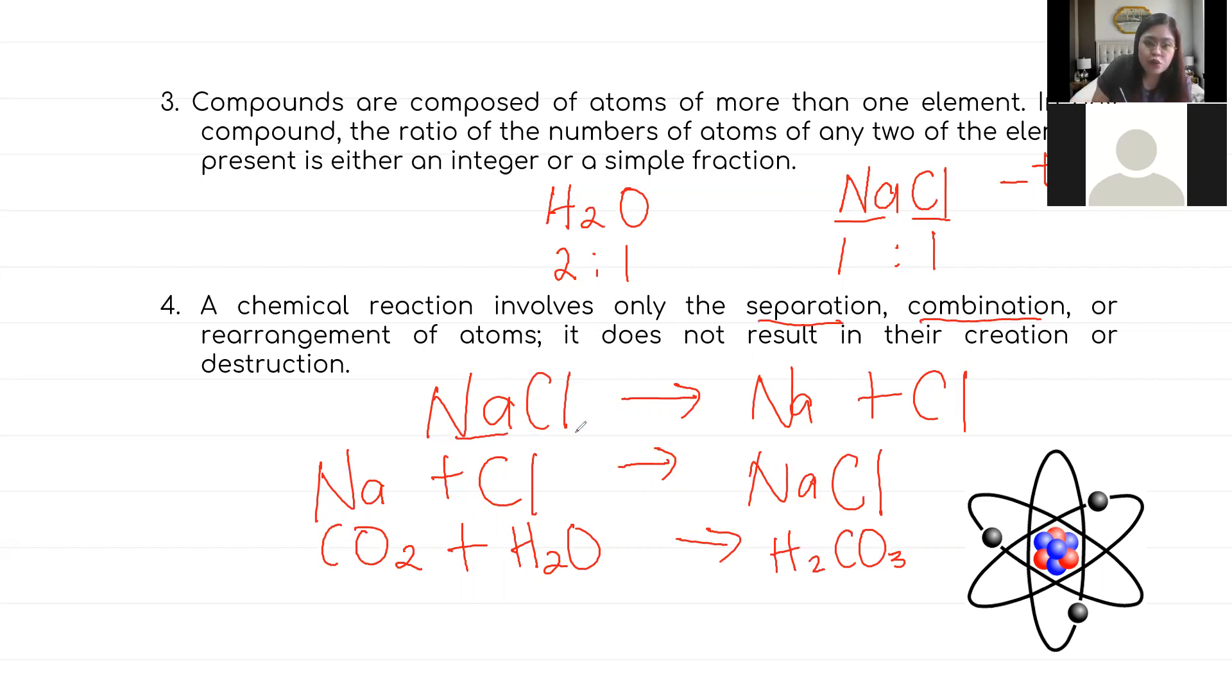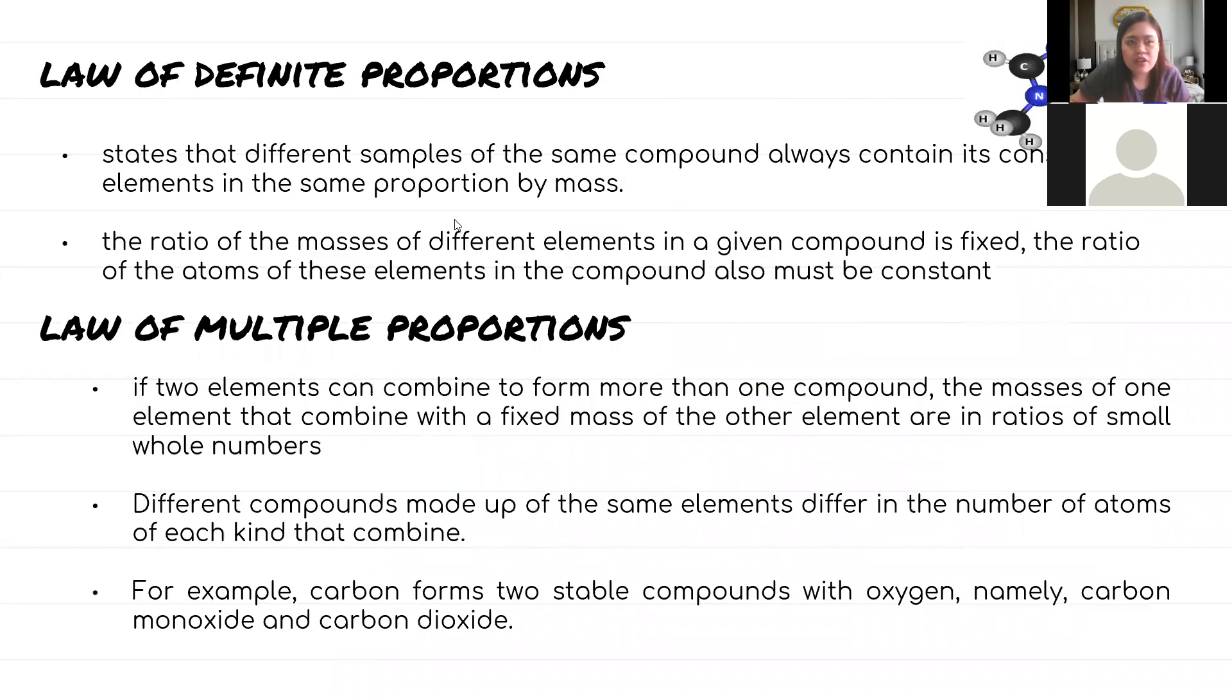In a chemical reaction, no new atoms are created or destroyed. When sodium and chloride separate, you will still get the sodium and the chloride. No new element is formed, no new atom is formed, and no atom is destroyed. These are the discoveries of John Dalton in his experiment.